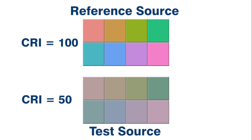The testing method evaluates the light source's ability to render eight standard pastel colors. The difference between the light reflected by the reference source and the light reflected by the test source provides the numeric CRI value.